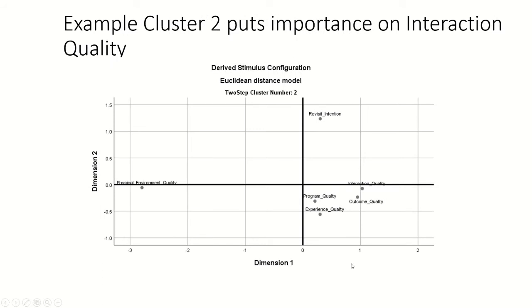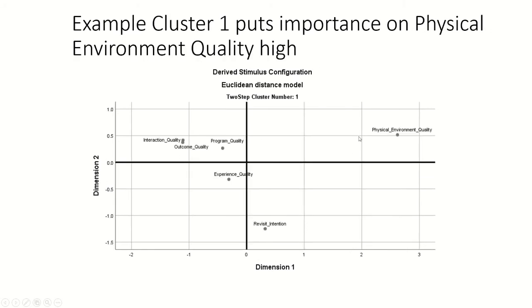If we look at cluster number 2, their revisit intention is high. Probably because for them, they don't put too much importance on physical environment quality, but they put more positive intent on program, experience, and outcome quality. So a very holistic, non-tangible expectation. Whereas cluster 1 really looks at the tangible expectation. Very different clusters here.